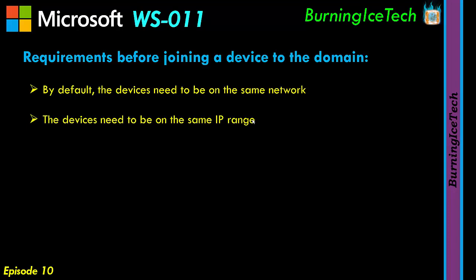Another thing to keep in mind is that these devices need to be on the same IP range. For example, if your server's IP range is 192.168.0.x, the device being joined — whether a server or client — needs to also be on 192.168.0.x. If they're on different IP ranges, they're effectively on two different networks and cannot communicate with one another, so this is crucial to verify.